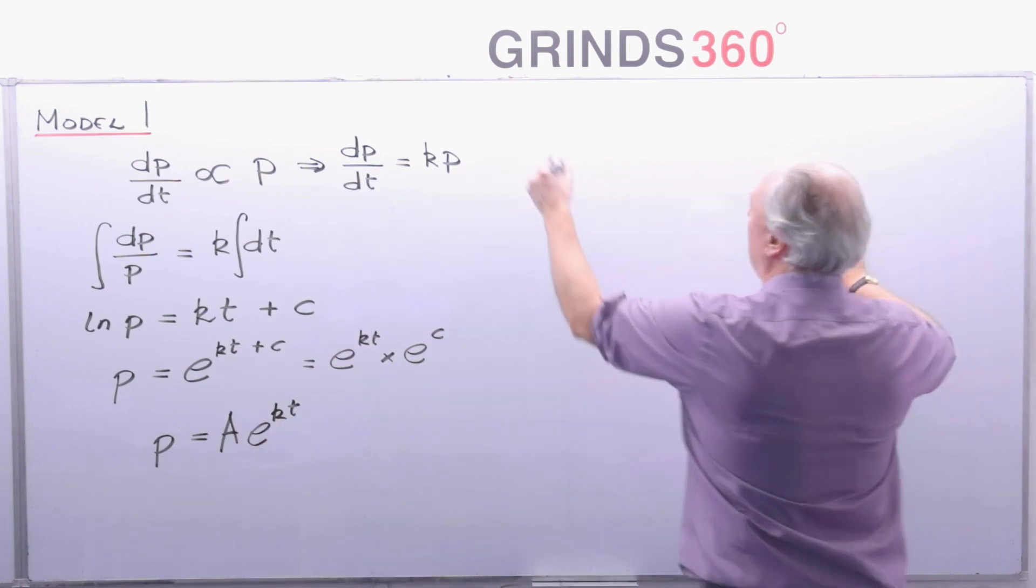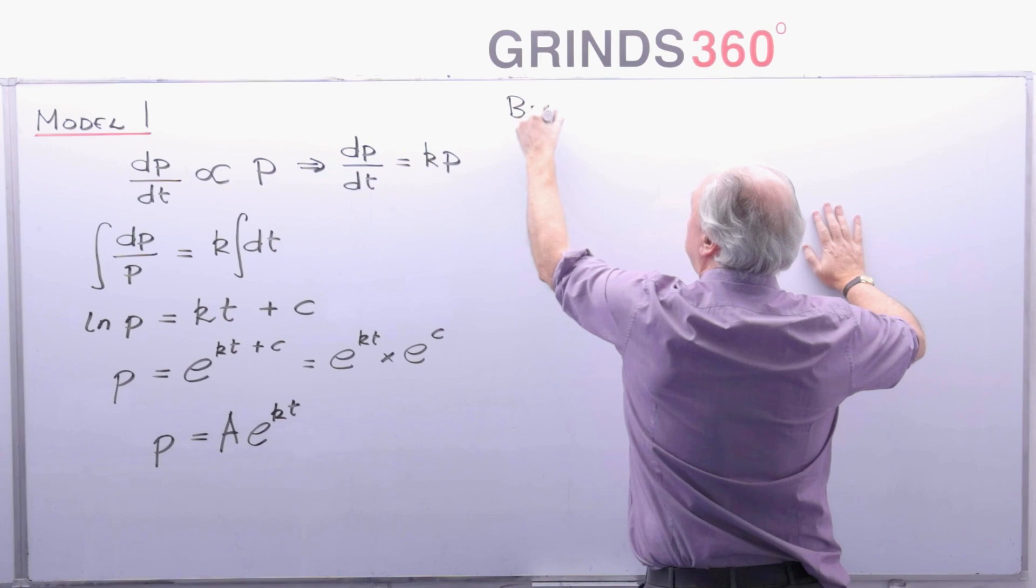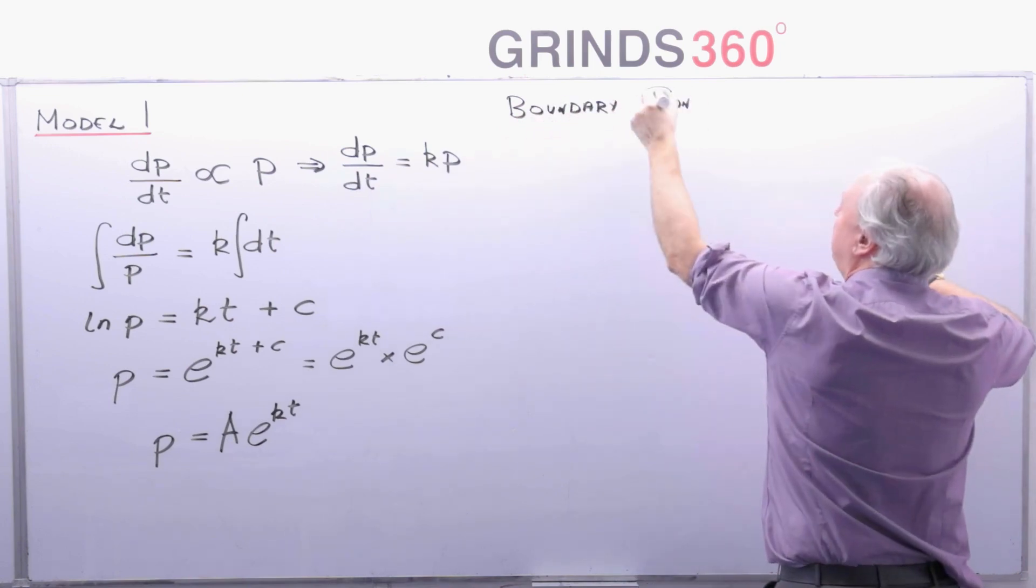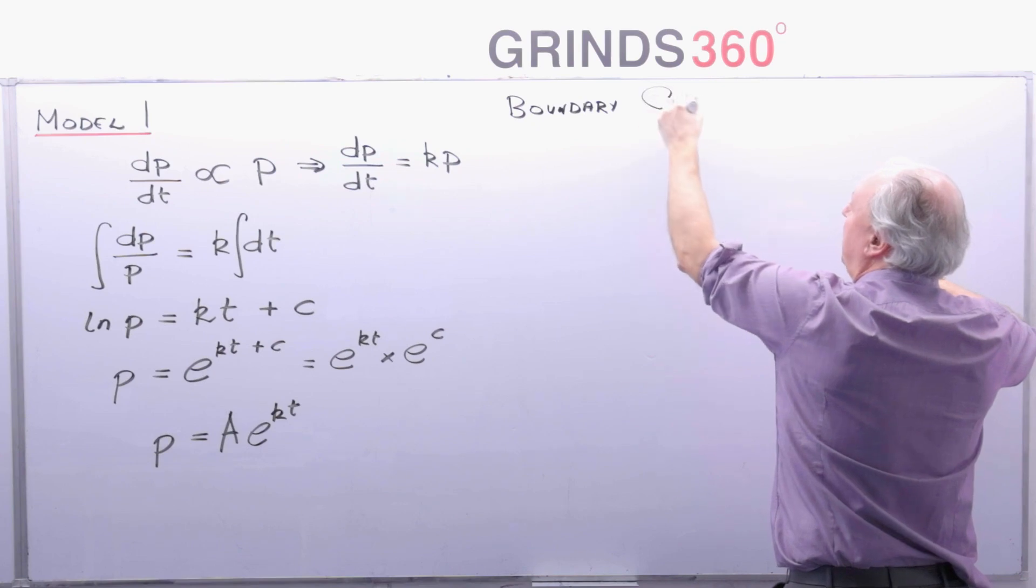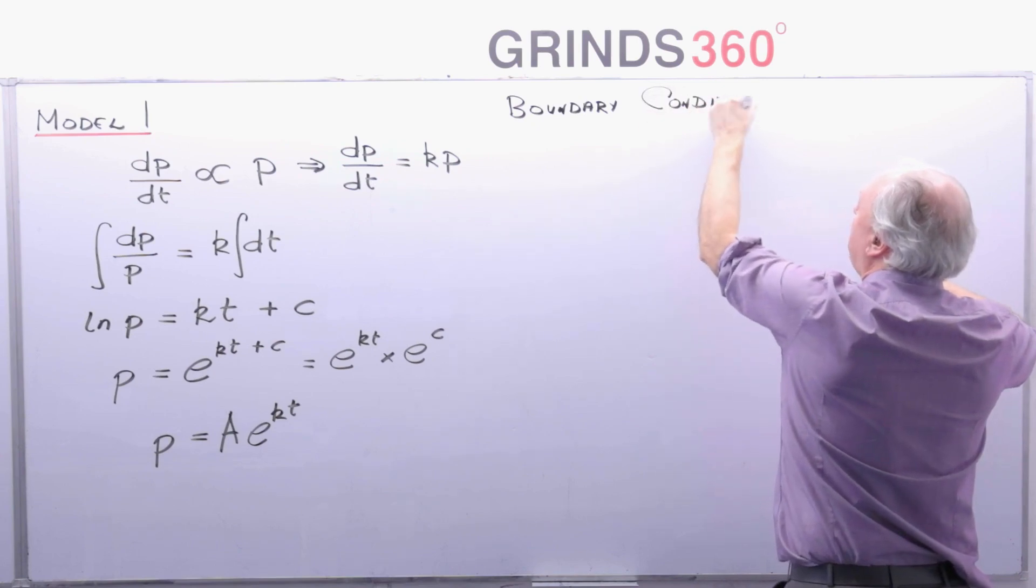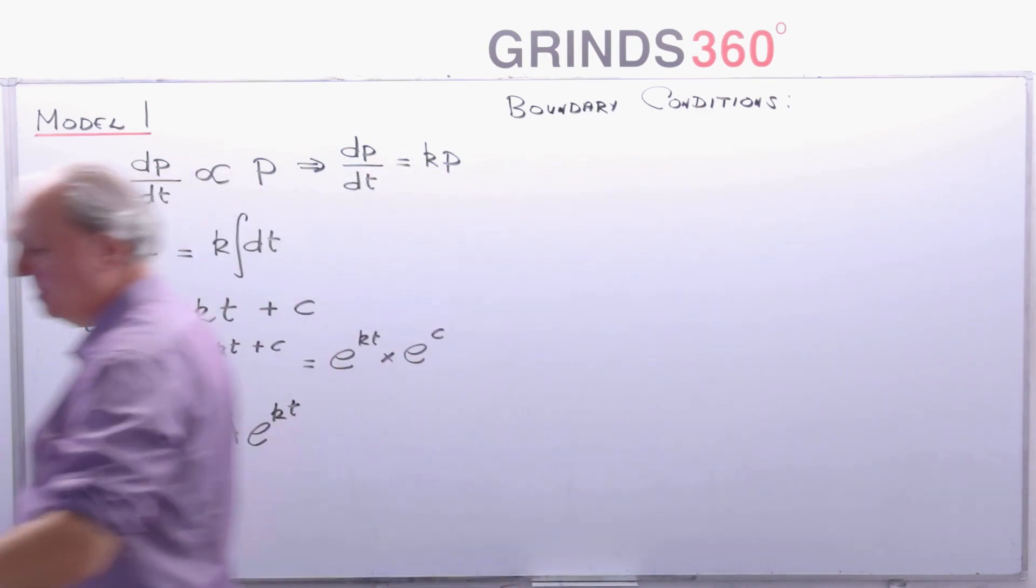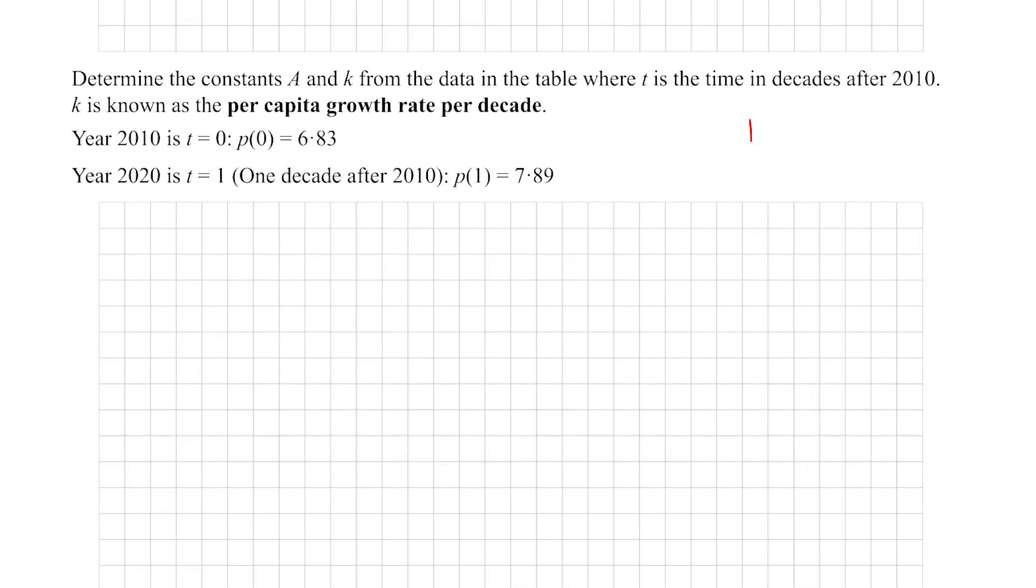So now basically to get my full solution I need to find A and I need to find k. So I'm going to use what I call my boundary conditions, my extra information that I'm going to take from my table of data. So let's go back to our notes. So we want to now determine the constants A and k. That value of k is known as the per capita, the per head, growth rate per decade because I'm putting time in decades.